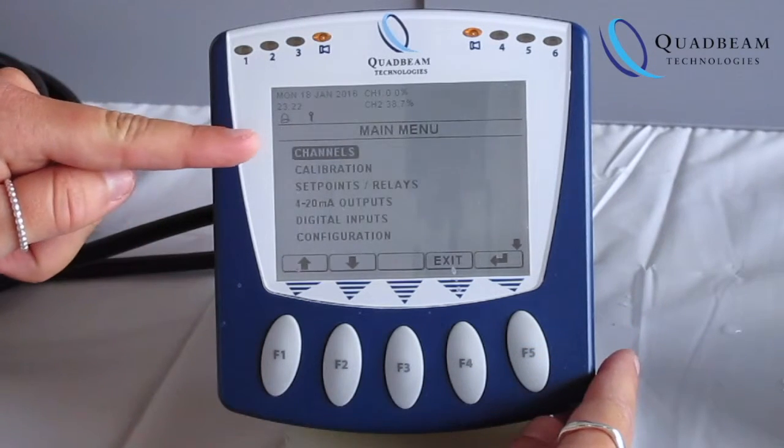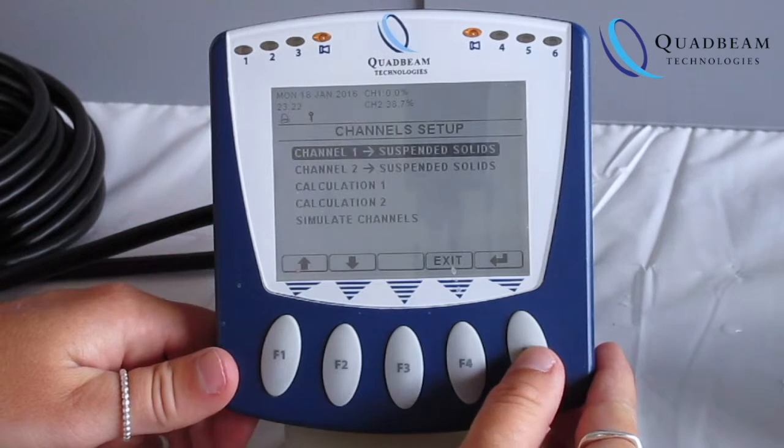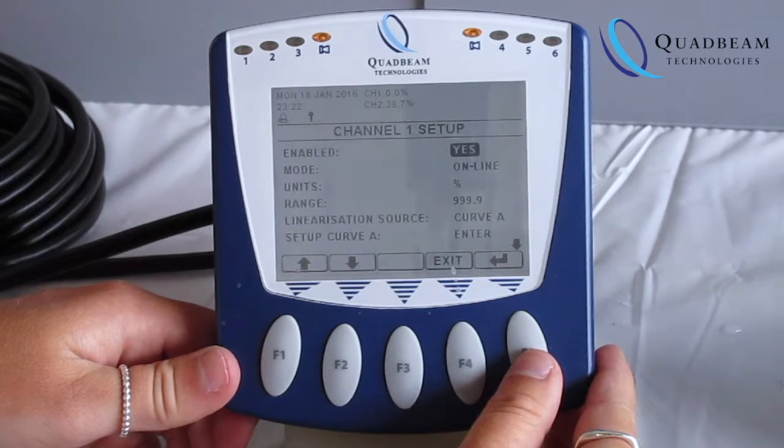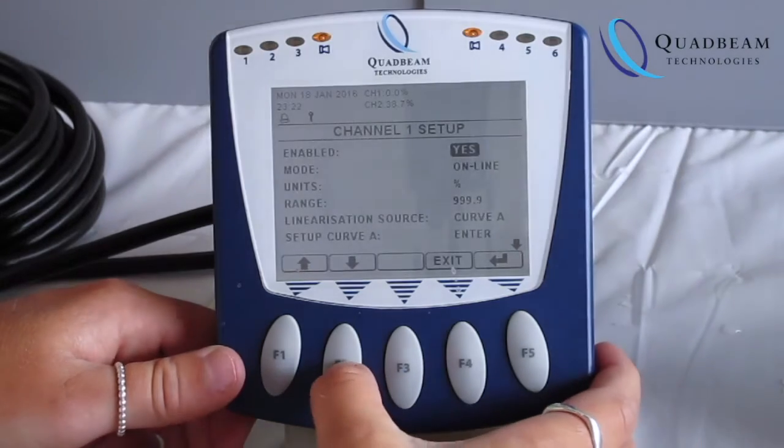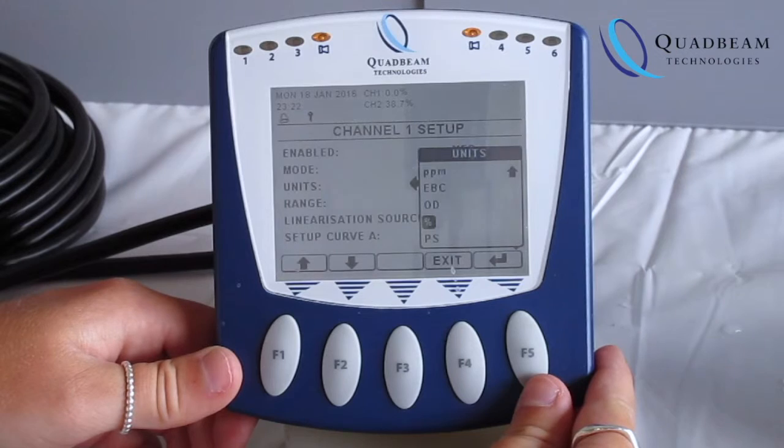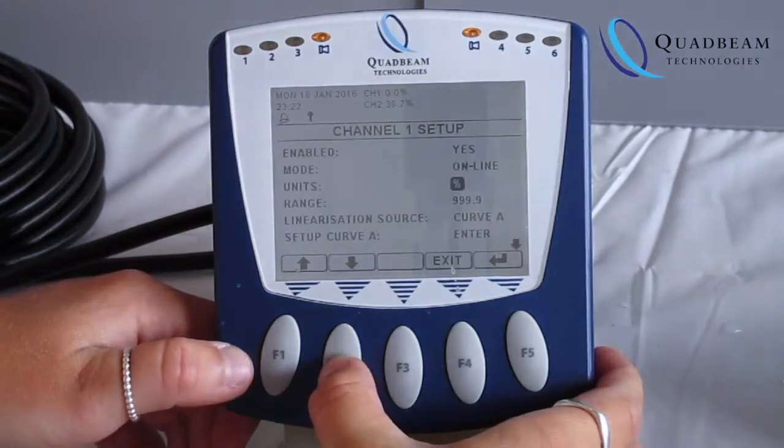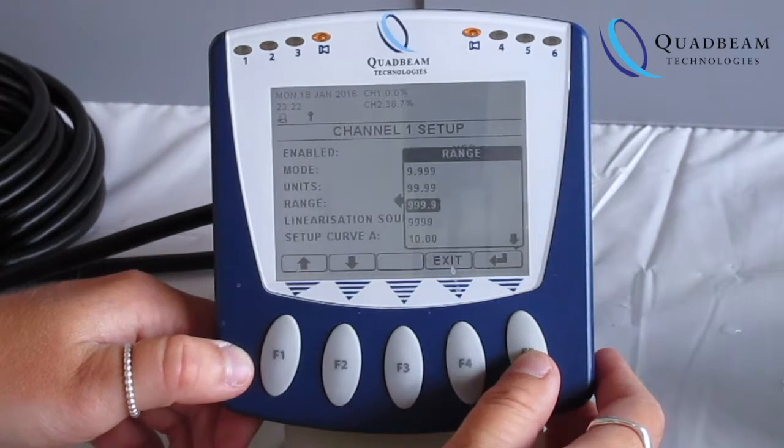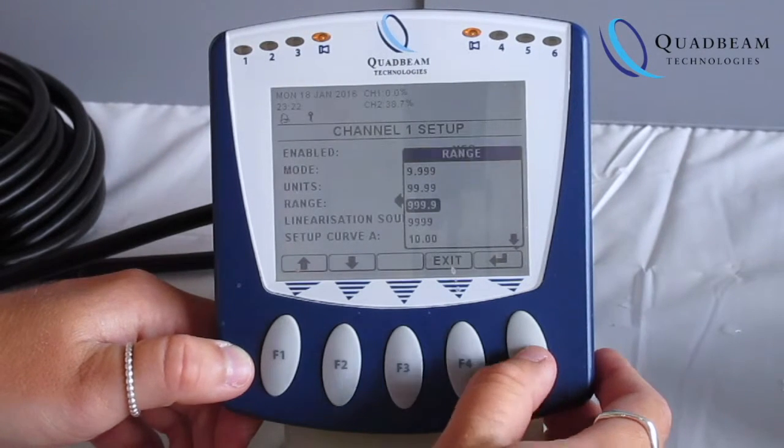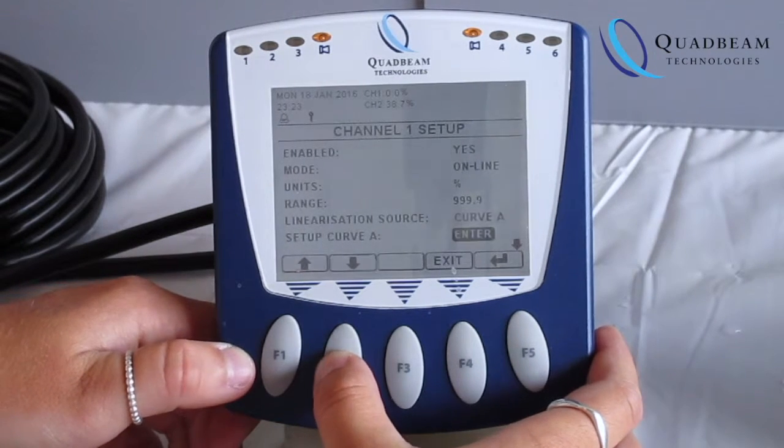First we move to channels, then we select the channel of the sensors that we're setting up and make sure it's enabled. Move down to units, insert the value of the units that we want, in this case percentage, then choose the range. In our case we're choosing 999.9 and then we move to the setup curve itself.